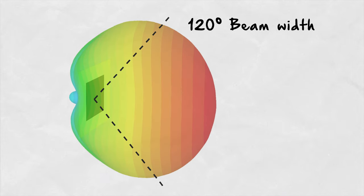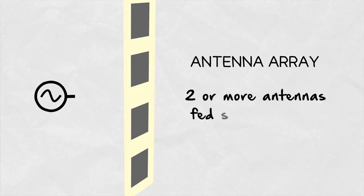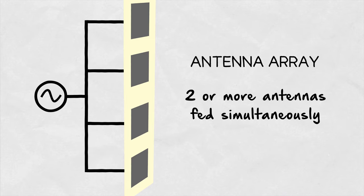In cases when the radiation pattern of a single antenna is too wide, or if its gain is too low, antenna arrays come handy. Antenna array is typically a setup of two or more identical antennas working as one by being fed the same signal simultaneously.